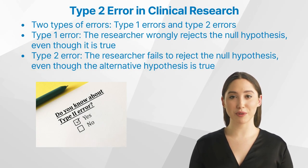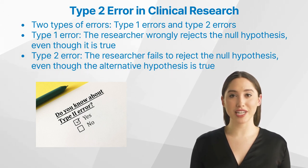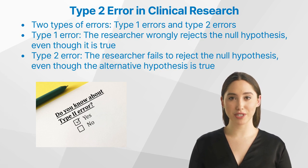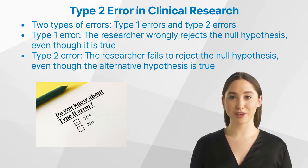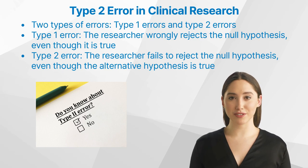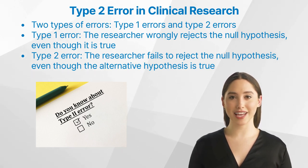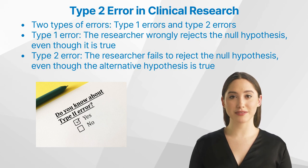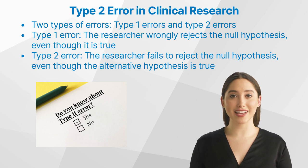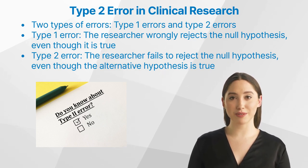There are two types of errors that can occur in clinical research: Type 1 errors and Type 2 errors. A Type 1 error, also known as an alpha error, occurs when the researcher wrongly rejects the null hypothesis even though it is true. A Type 2 error, also known as a beta error, occurs when the researcher fails to reject the null hypothesis even though the alternative hypothesis is true. False negatives are also possible — a false negative occurs when a test result is negative but the condition being tested for is actually present. Type 2 errors or false negatives can occur due to small sample size or wrong assumptions about the true treatment effect.